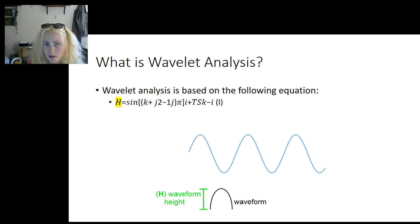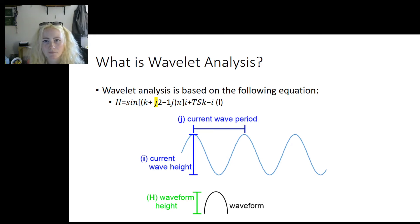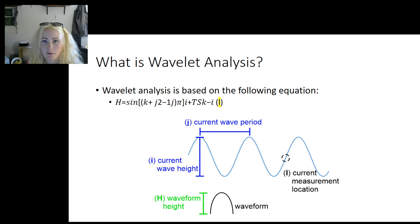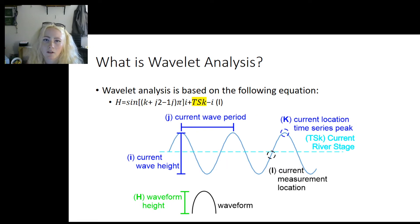From the equation, H is the waveform height that the current waveforms are being tested against. I is the current wave height. J is the current wave period. L is the measurement location of the waveform being tested. K is the current location in the time series at the wave peak. And TSK is the current river stage.